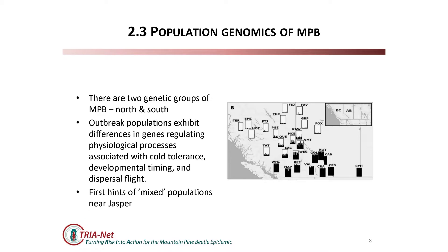I'll talk a little about beetles, and this is work primarily done with Felix Sperling's group - there's also a poster here by Vick Shigelski and Aaron Campbell that touches on this topic. What we've known since the last TRIA project is that there are really two genetic clusters of mountain pine beetles in the upright region in Canada: a northern cluster and a southern cluster. Each graph here represents a population that's been sampled, and each individual has been split into a bar representing how much of its genotype is northern type versus southern type.